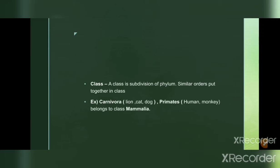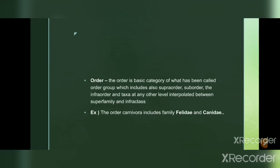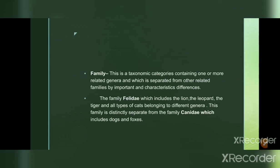The next category is order. Organisms of a particular class are further separated into orders, which are considered more accurate than class. There are around 18 to 25 orders of Mammalia. For example, order Carnivora accommodates families such as Felidae and Canidae. Different orders include Carnivora, Primata, Chiroptera, and Cetacea.